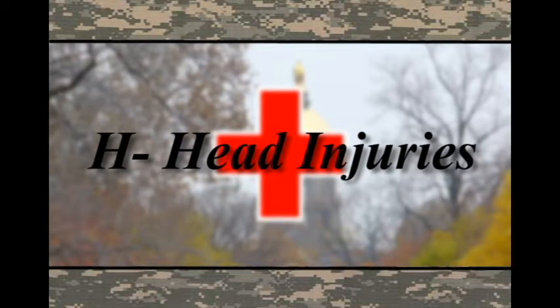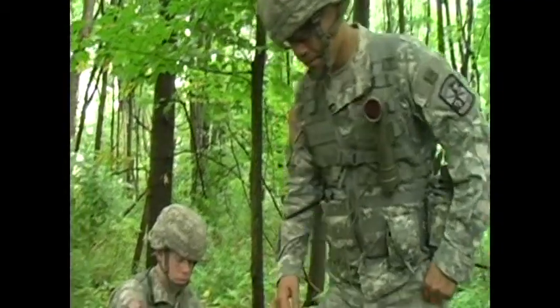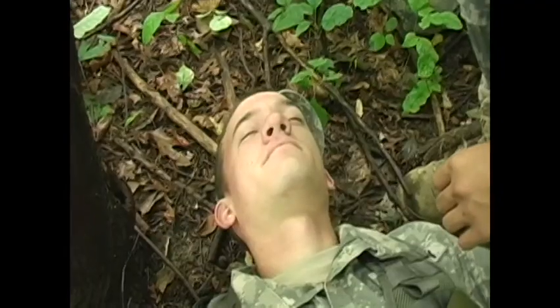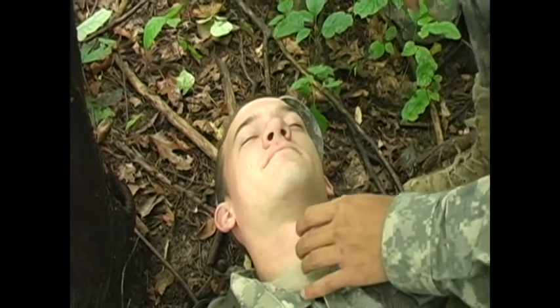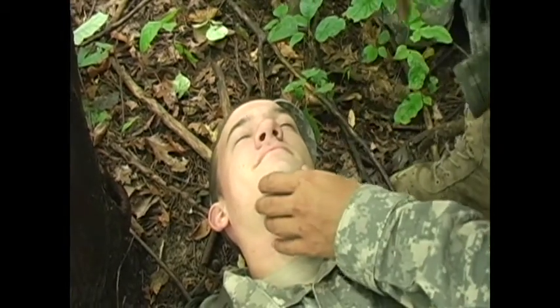Head injuries: Head injuries can be assessed by looking for the following signs — unequal pupils, fluid from ears, nose, or mouth, slurred speech, confusion or dizziness, convulsions, nausea or vomiting, bruising on the head, or paralysis. The evaluator checks the casualty and does not see any bruising or liquids from the ears or nose.